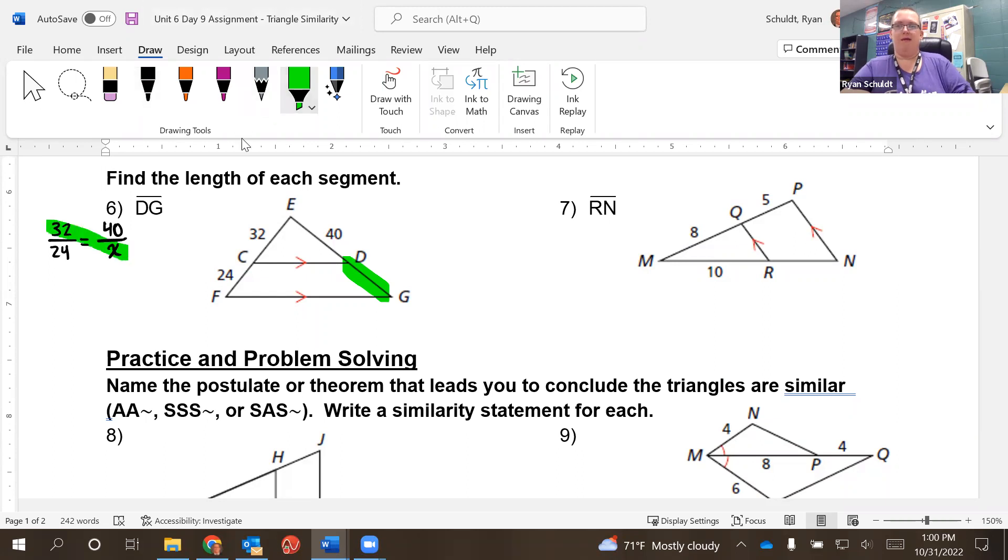And 32 times X equals 24 times 40. Let's see. That's 40. That's like 960. Yep. Got it. 960. Divide by 32, should be 30. It is 30. X is 30. So our X was simply DG. That means DG is equal to, you got it, 30.